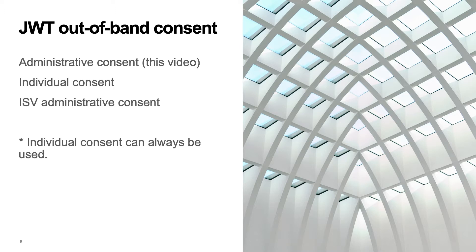DocuSign provides three options for JWT out-of-band consent: administrative consent, individual consent, and ISV administrative consent. This video discusses administrative consent for the JWT grant. A future video will discuss individual consent. ISV administrative consent is required if an ISV application whose integration key is managed by the ISV wants to use administrative consent for users on your account. More information on this consent flow is listed in the show notes. Individual consent can always be used since it can be used with any type of DocuSign account. Many ISVs use individual consent since all DocuSign customers can use it. I'll discuss ISV issues more at the end of this video.